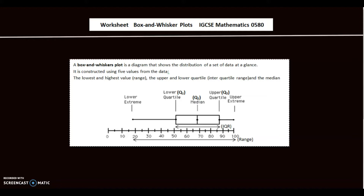It is constructed using five values from the data: the lowest value, which you mark on the grid, the highest value, then the lower quartile and upper quartile — each represented by a dot — which become the boundaries of a box. The lower end of the box represents the lower quartile, the upper end represents the upper quartile, and the median is plotted as a line on the box.